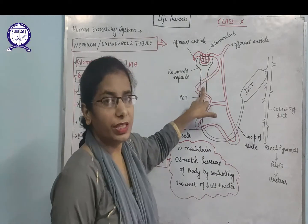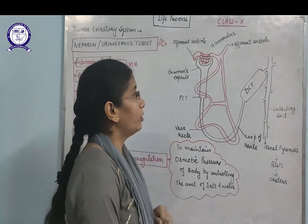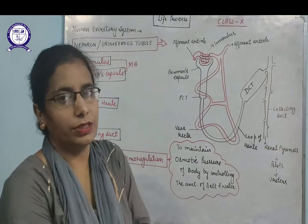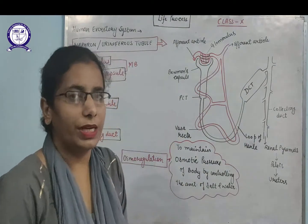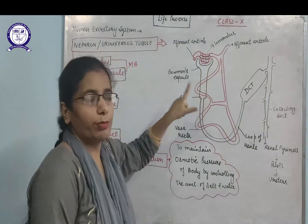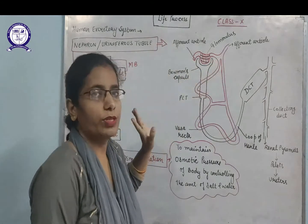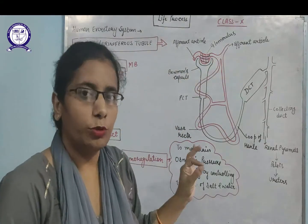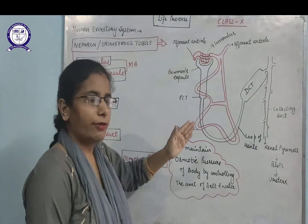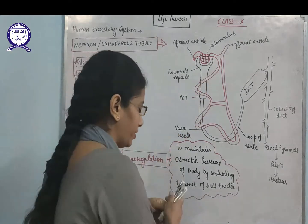Filtration of waste takes place in the glomerulus. What gets filtered? Everything except RBCs, WBCs, and blood platelets will pass into the Bowman's capsule. RBCs, WBCs, and blood platelets remain inside the glomerulus, while everything else passes into the Bowman's capsule and then into the PCT.